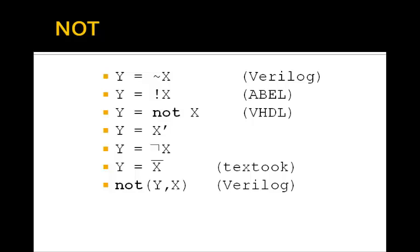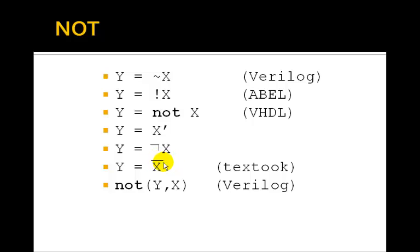Here are some other ways of writing the NOT. We've seen in Verilog it's the tilde. In ABLE, another earlier hardware description language, it uses the exclamation point for NOT. VHDL, as we saw, uses NOT the word. Sometimes you'll see a little tick following X to indicate NOT. Some mathematicians use this funny looking symbol for NOT. Some textbooks you might see a bar over the X to indicate X NOT, which is hard to do on a computer. And finally, Verilog has a NOT function in which the output Y and the input X are the parameters of the NOT function.